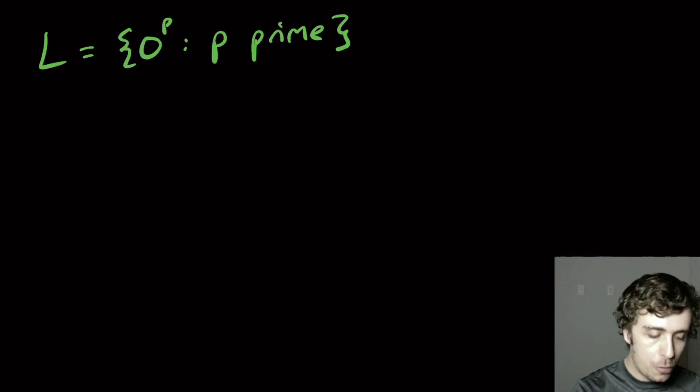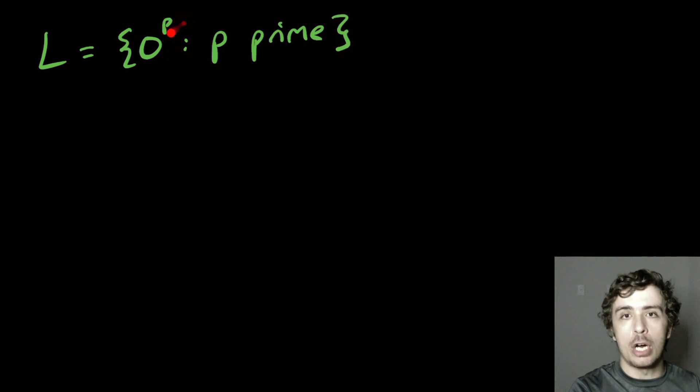Okay, so I want to prove that the language of all strings of zeros which are of prime length is not a regular language. So this is actually one of the more complicated pumping lemma proofs, but we're going to get through it.